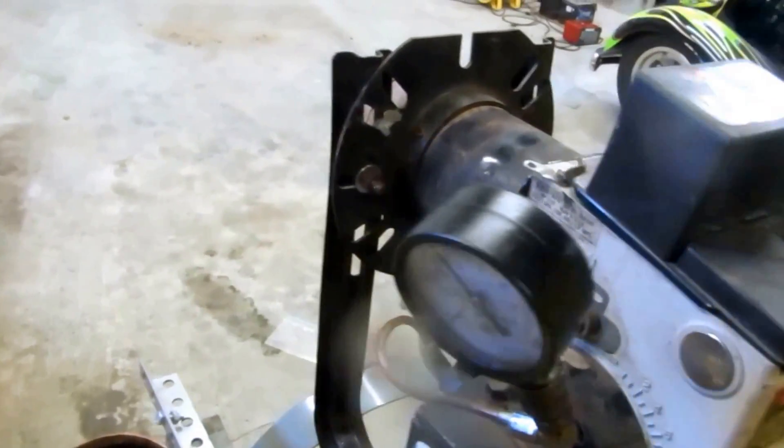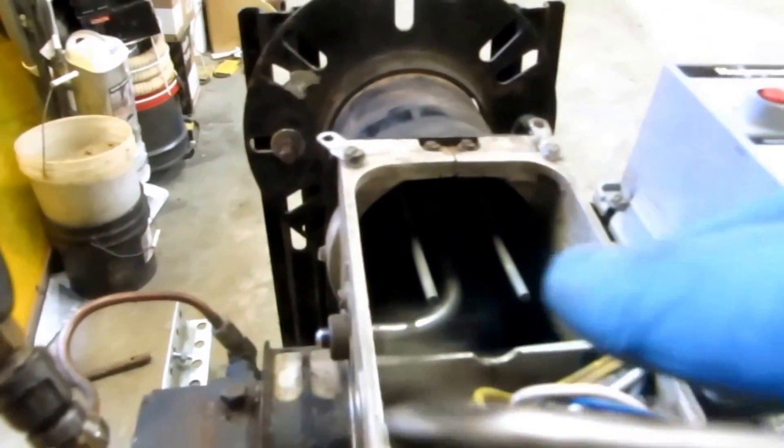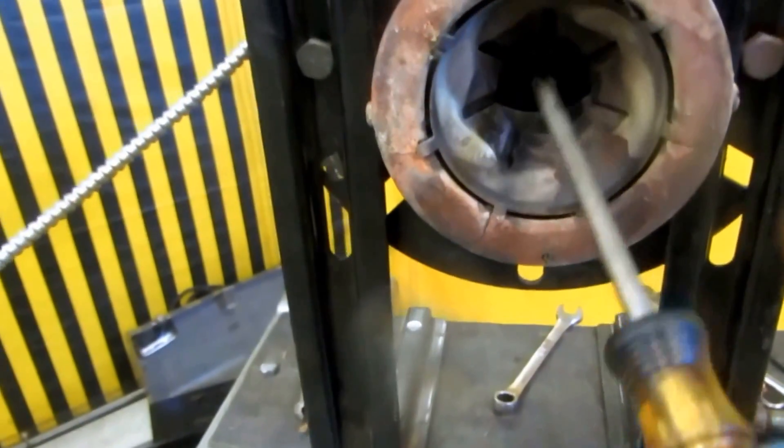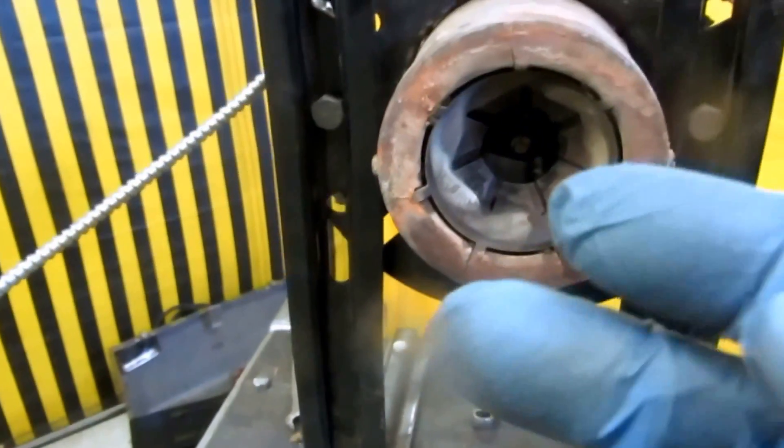That transformer will send spark down those electrodes right there. It will arc right across—that's what you were seeing before. Then as the fan blows, that arc out to ignite the oil.